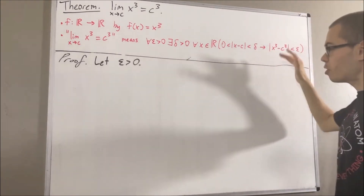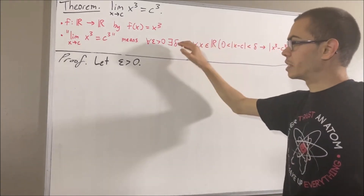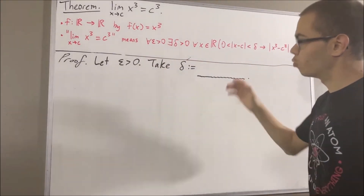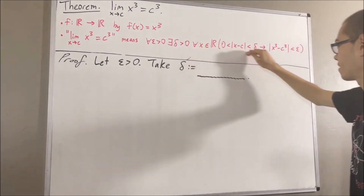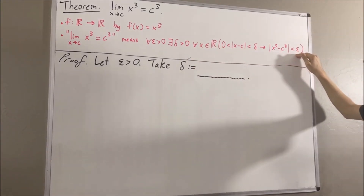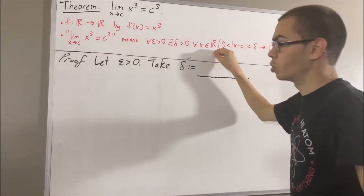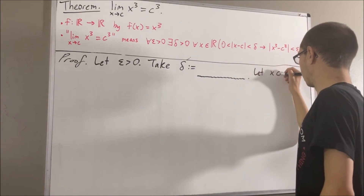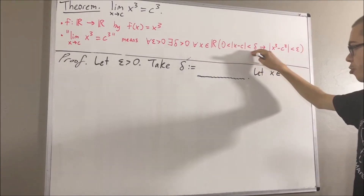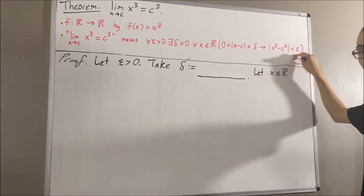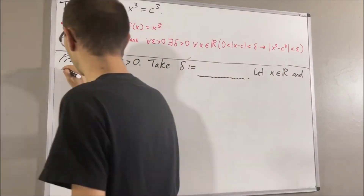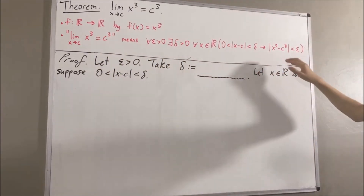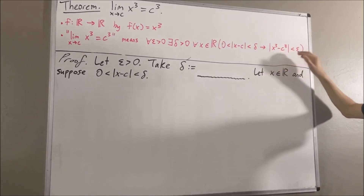Let's pretend as though we've already figured out what to choose delta to be. And with this choice of delta, we want to show that this statement is true. Since we're trying to prove a statement about all real numbers, let's give ourselves an arbitrary real number called x. From here, we want to show if this is true, then this is true. So let's suppose that this is true. The whole goal is to show that the absolute value of x cubed minus c cubed is less than epsilon.